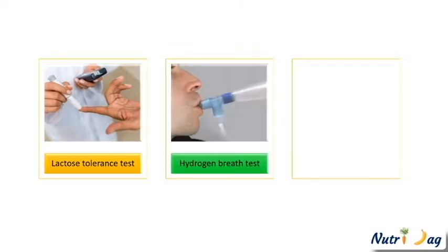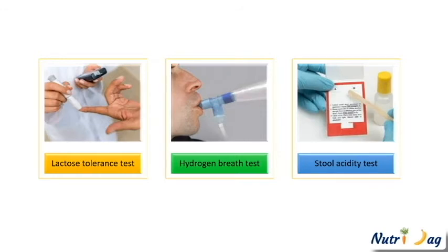The second test is the hydrogen breath test, which also requires drinking a high-lactose liquid. The larger the amount of exhaled hydrogen, the higher the lactose indigestion rate. The third is the stool acidity test, used for infants and children who cannot undergo other tests, where lactic acid and other acids in the stool are detected.